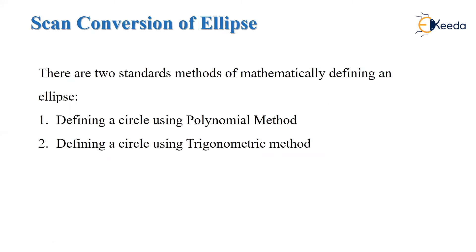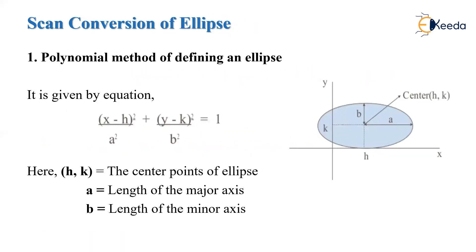There are two standard methods for mathematically defining an ellipse: the polynomial method and the trigonometric method. The polynomial method uses the equation (x - h)²/a² + (y - k)²/b² = 1. If the ellipse is at the origin, coordinates are (0, 0); otherwise we measure h from the x-axis and k from the y-axis. Here a is the major axis and b is the minor axis. By putting the values into this formula, we get the ellipse shape.